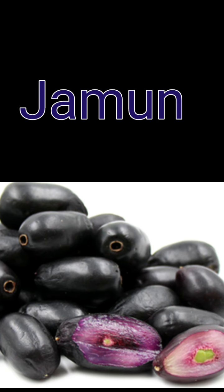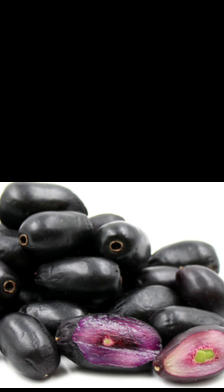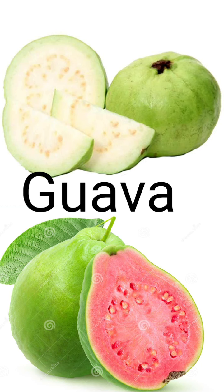The next one is jamun — J-A-M-U-N, jamun. Another one is guava — G-U-A-V-A, guava. We can get guava in two colours — one is white inside and another one is red inside.